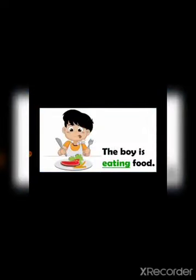Now we will see the examples. What does the boy do? The boy is eating food — eating is the action done by the boy, so eating is a verb. The girl is sleeping — sleeping is an action word done by the girl.